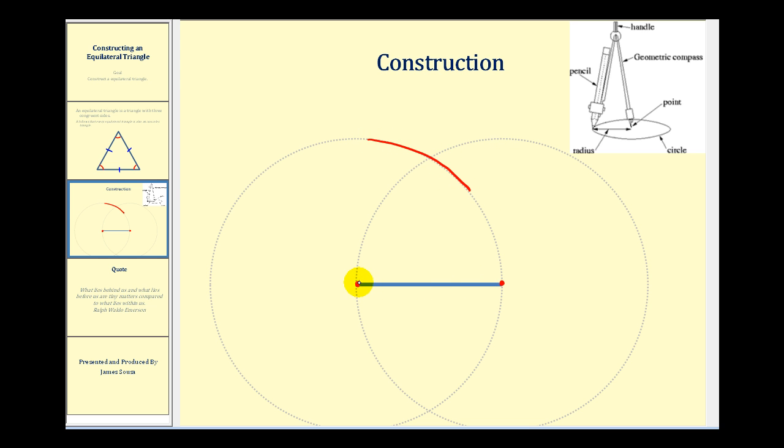And then we'll put the point of the compass on this end point and do the same. Swing an arc above the segment, and it would look something like this.